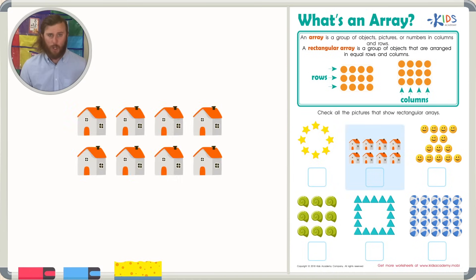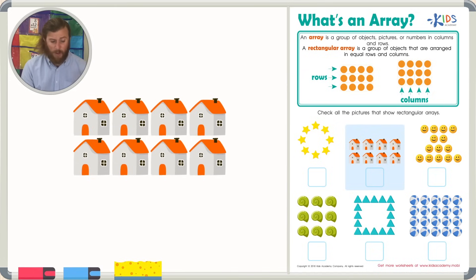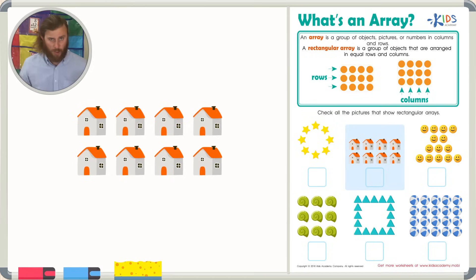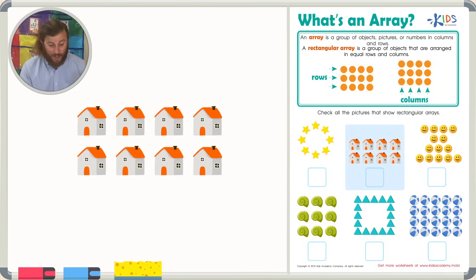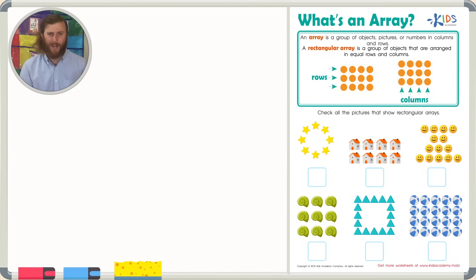Our second picture shows houses. There are four houses in the first row and four houses in the second row. We have to make sure there's an equal number in each row and in each column. There are four in each row and I can clearly see there are two in each column. That shows me that this is an array, so let's go ahead and check this picture.